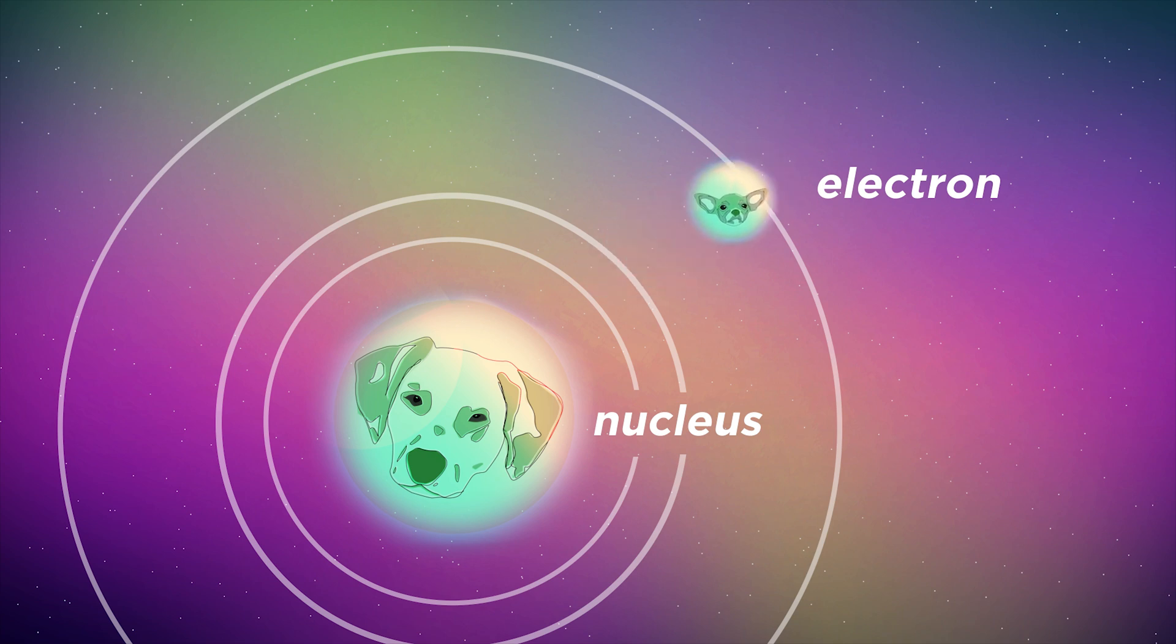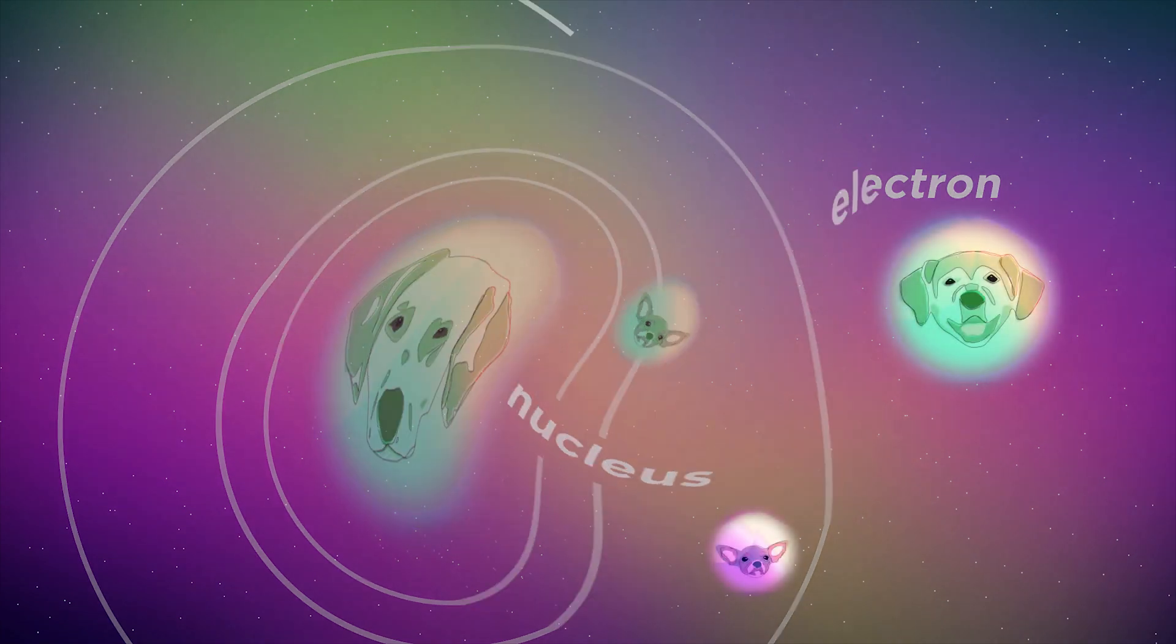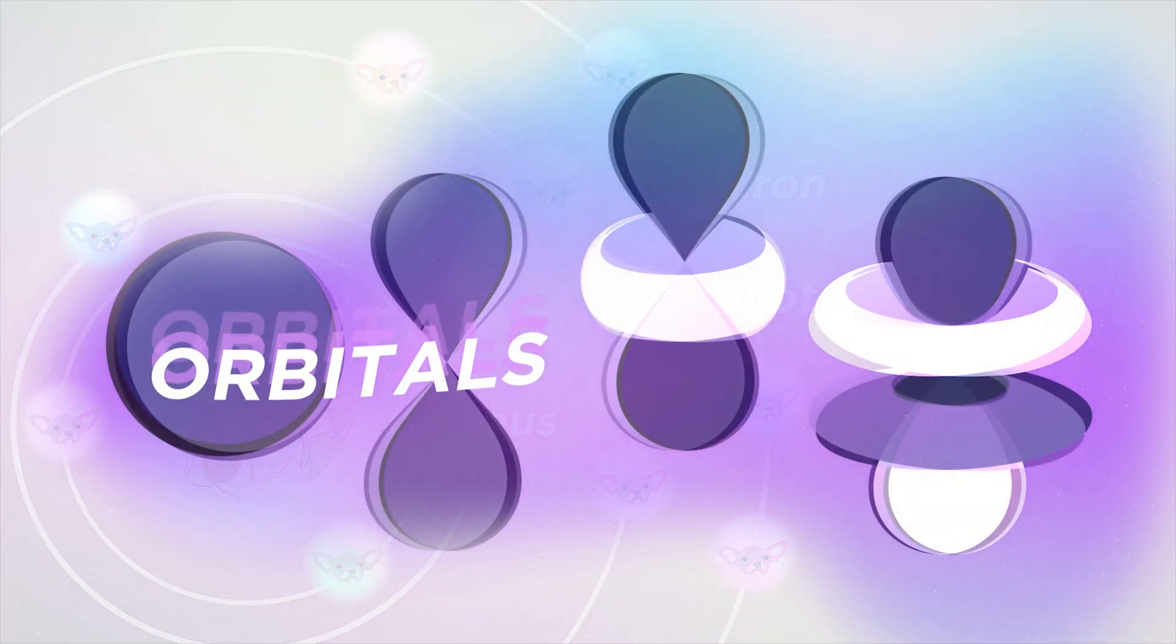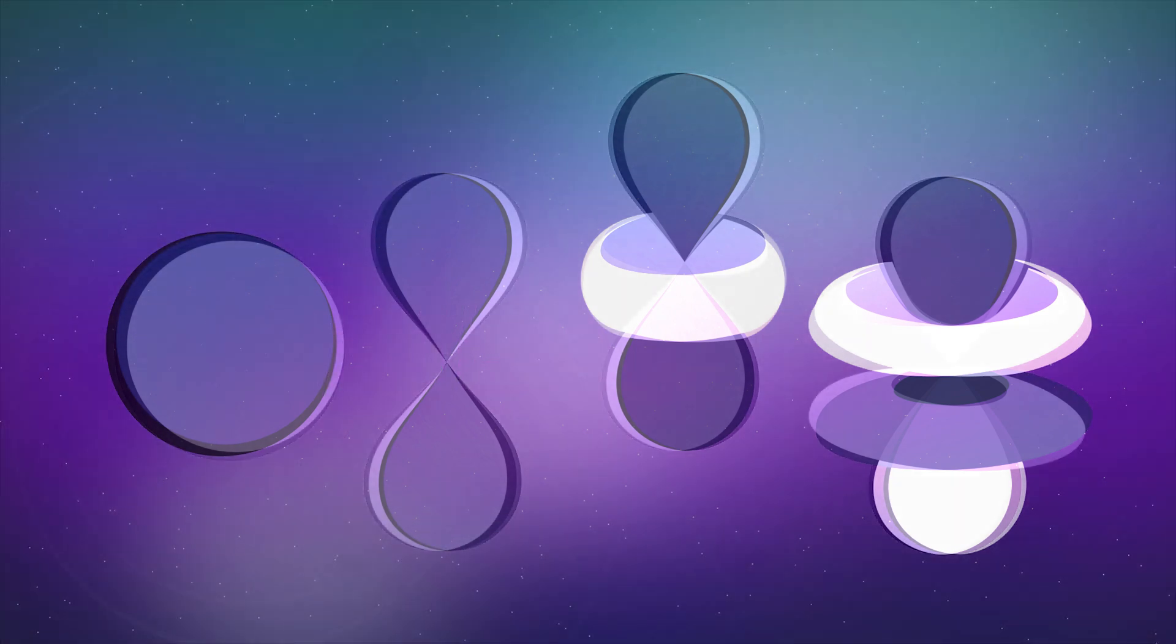In the last video, we only modeled an atom having one electron. For atoms having multiple electrons, we need to talk about orbitals, areas where we expect those electrons to be positioned. These orbitals come in a few shapes and sizes, but for now we have these four.